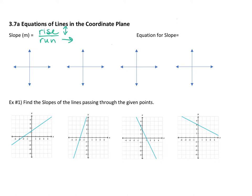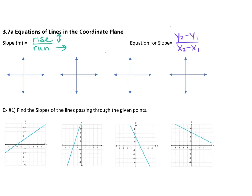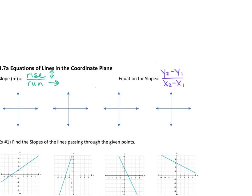The equation we use for slope — you've seen this one before. It goes Y2 minus Y1 over X2 minus X1. We get those X and Y values from points we're using. So if you have points on a graph — an X1, Y1 and an X2, Y2 — we take those points and drop them into our slope equation to find the slope of a line.